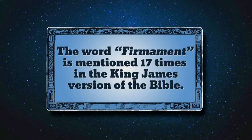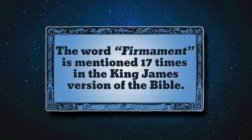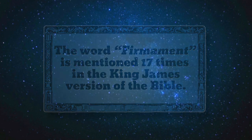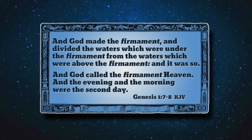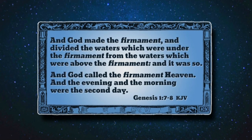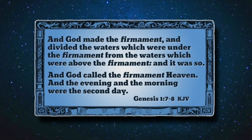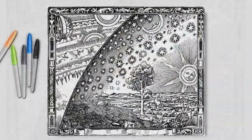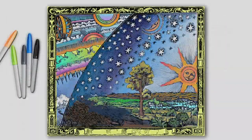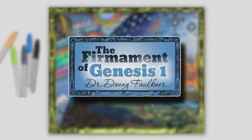The word firmament is mentioned 17 times in the King James Version of the Bible. The Day 2 creation account in the first chapter of Genesis describes God making a firmament to divide waters above from waters below. What was this firmament? Understanding what God made on Day 2 can lead to some stunning astronomical conclusions. Coming up on today's edition of Origins, the firmament of Genesis 1 with Dr. Danny Faulkner.